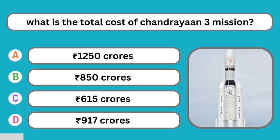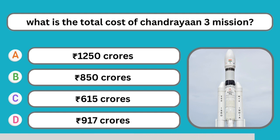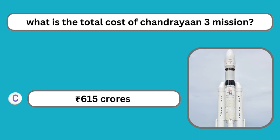Question number thirty-three: What is the total cost of the Chandrayaan 3 mission? The correct answer is 615 crores.